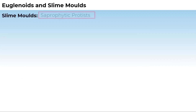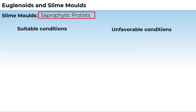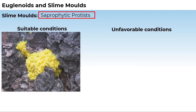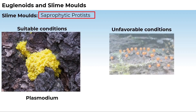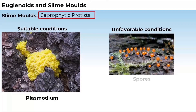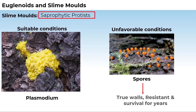Slime moulds are saprophytic protists. Under suitable conditions, they form an aggregation called plasmodium, which may grow and spread over several feet. During unfavourable conditions, the plasmodium differentiates and forms fruiting bodies bearing spores at their tips. The spores possess true walls and are extremely resistant, surviving for many years.